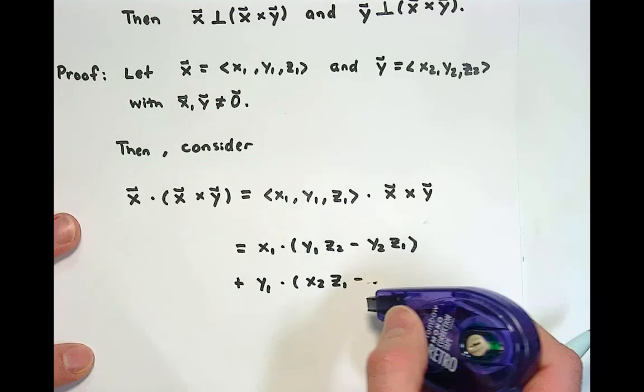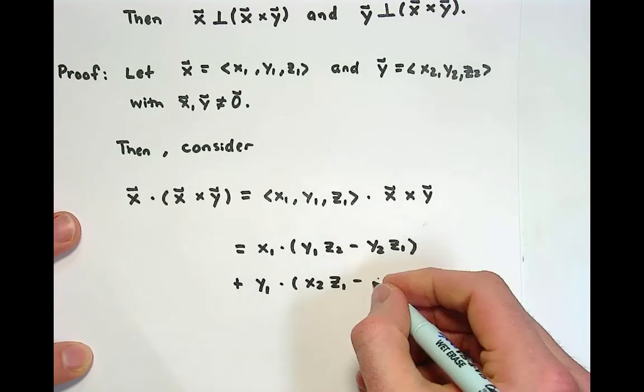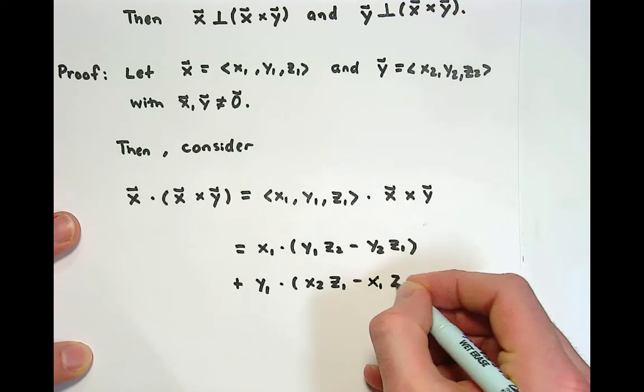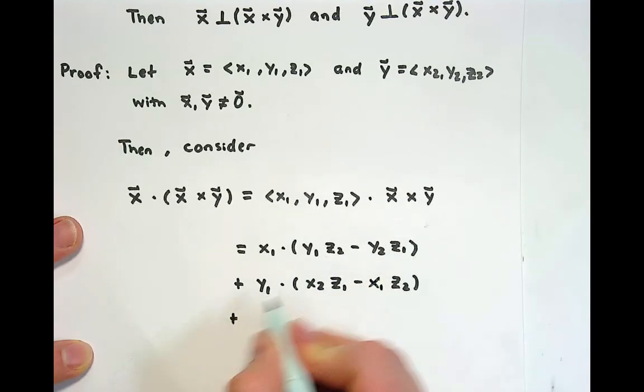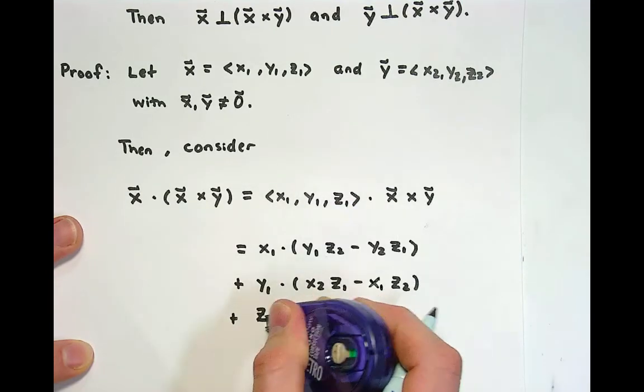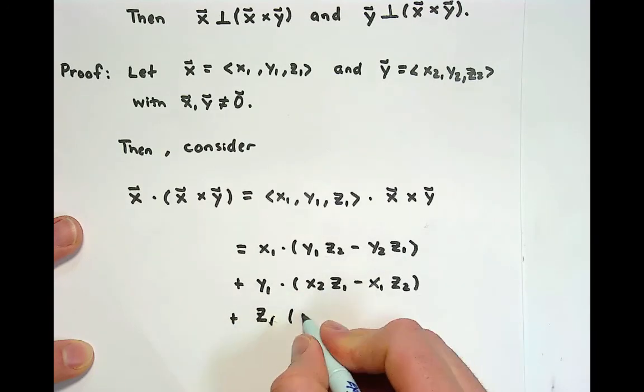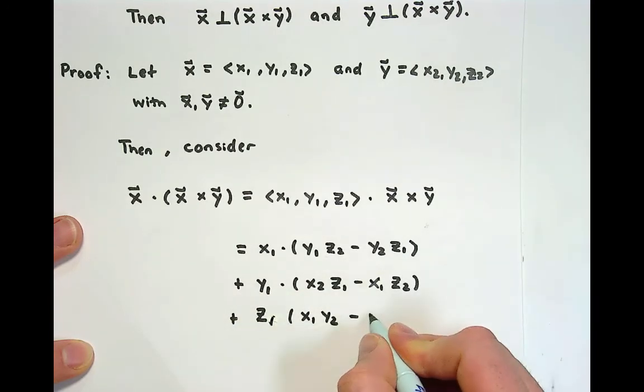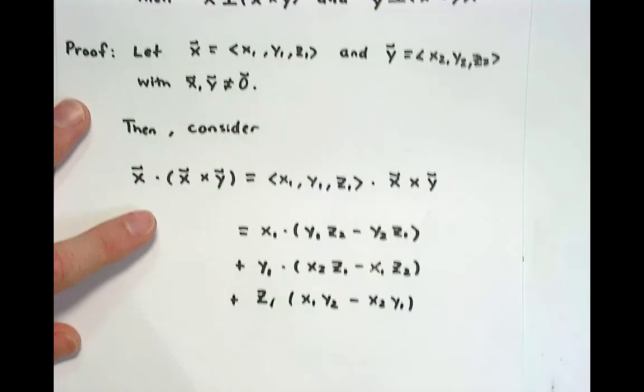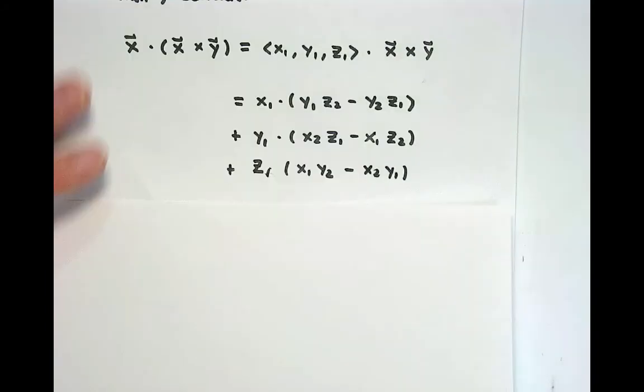So now I'm going to multiply y₁ times x₂z₁, minus x₁z₂. And then finally, I dot the last components, which are z₁. That's the third component of the first vector. And then the last component of the cross product is x₁y₂ minus x₂y₁.